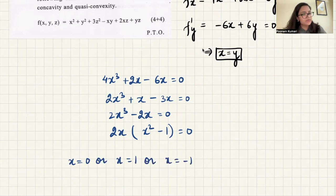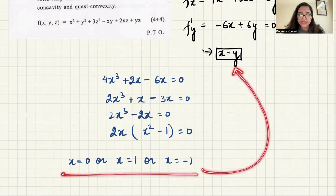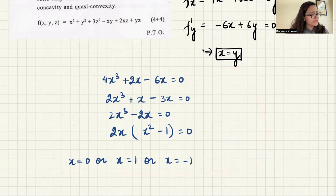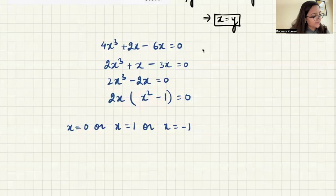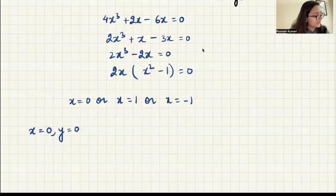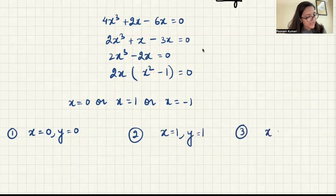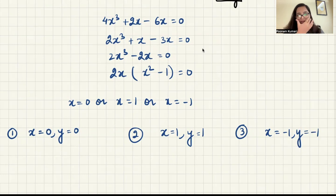For these three x values, the corresponding y values follow the condition y = x. So I have three stationary points: (0, 0), (1, 1), and (−1, −1). These are the three stationary points.